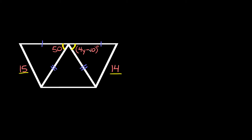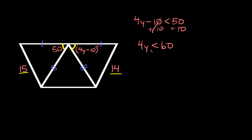Since the side 14 is smaller, the angle 4y minus 10 must be less than 50 degrees. To find the upper limit: 4y minus 10 is less than 50. Adding 10 to both sides gives 4y less than 60. Dividing both sides by 4, we get y is less than 15.